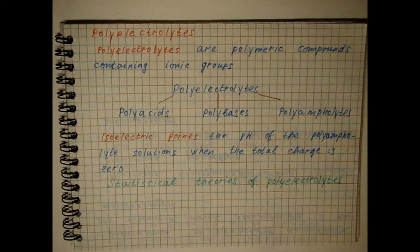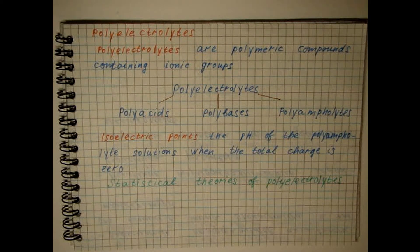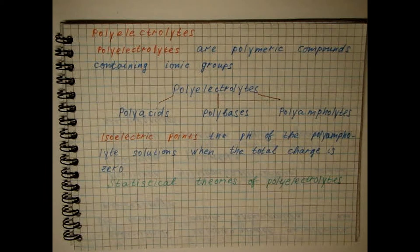In the models of a rigid rod, a macro-ion is considered in the form of a cylinder with charges smeared on the surface or in a volume.